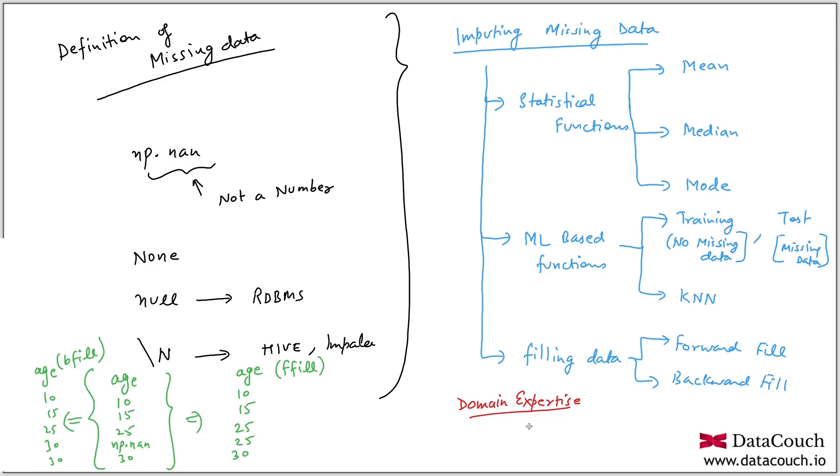If you are a domain expert, you can take this decision of imputing missing data in an intelligent manner. The recommendation is to use your domain expertise knowledge and based on that choose a particular method. When we start looking into code, we will see some of these techniques. But this is high level theory - what are the different strategies of imputing missing data. Let's move into the code and start exploring it more.